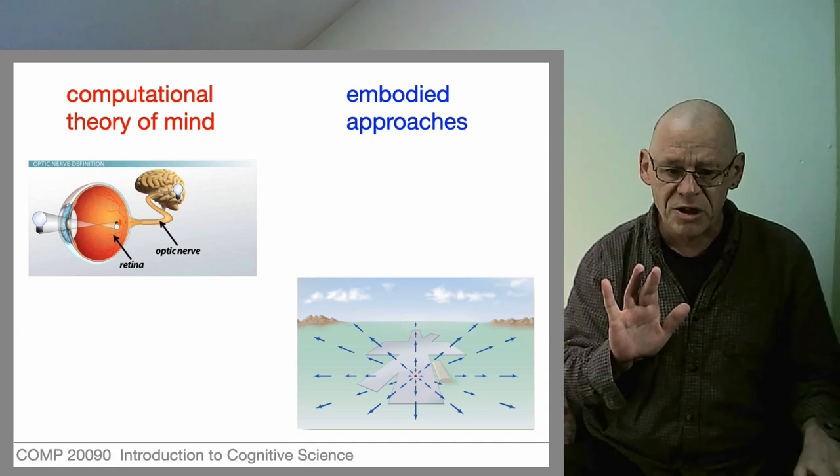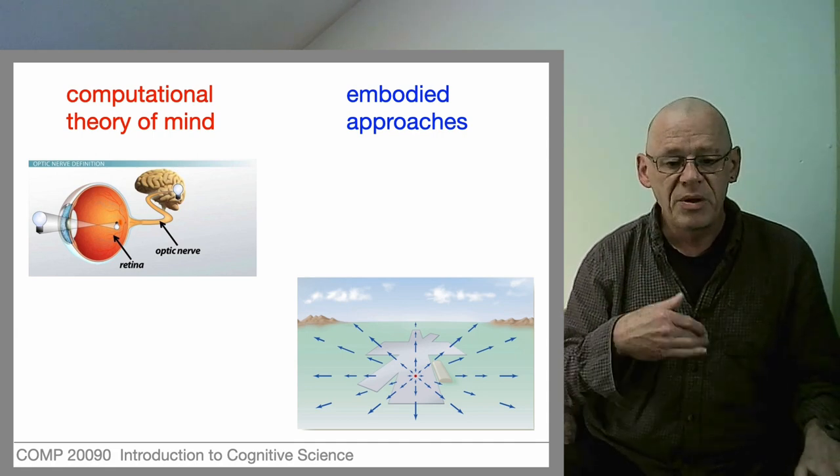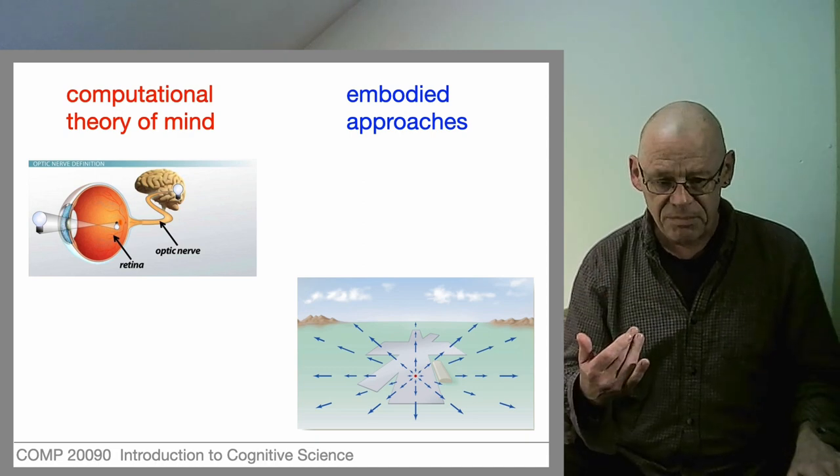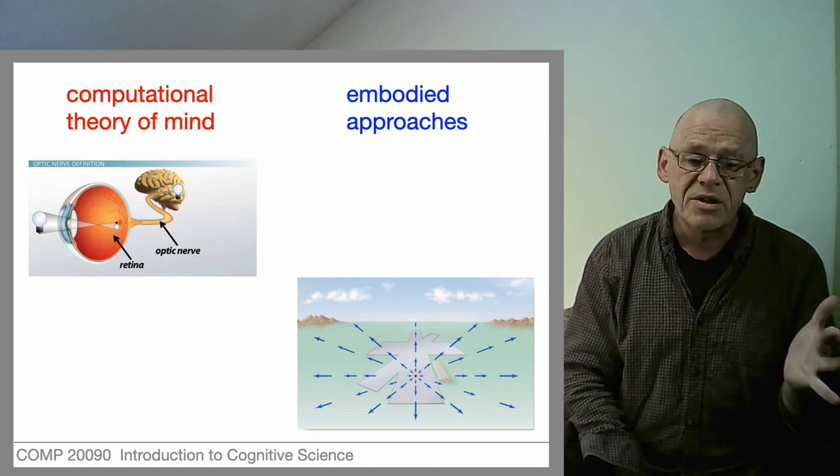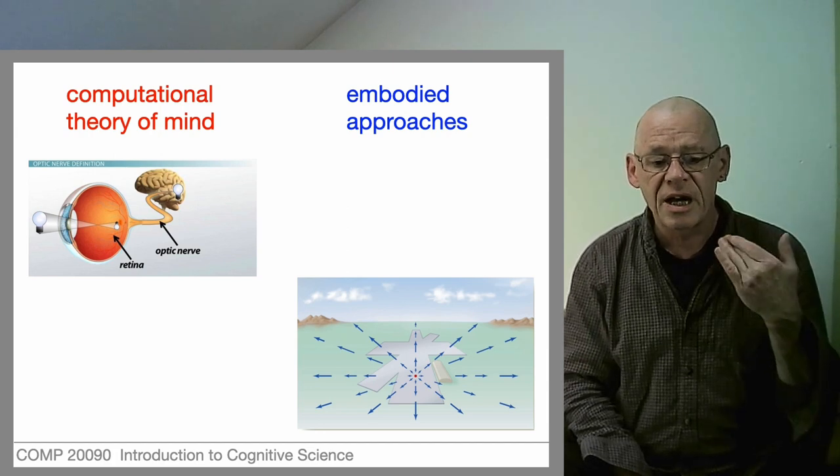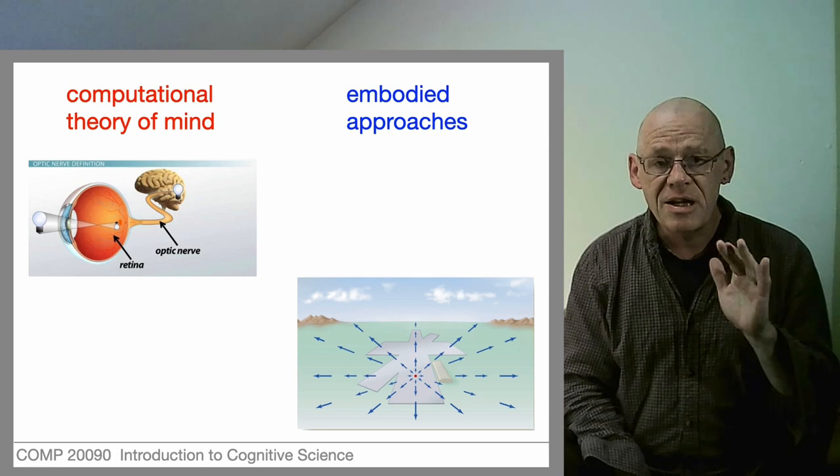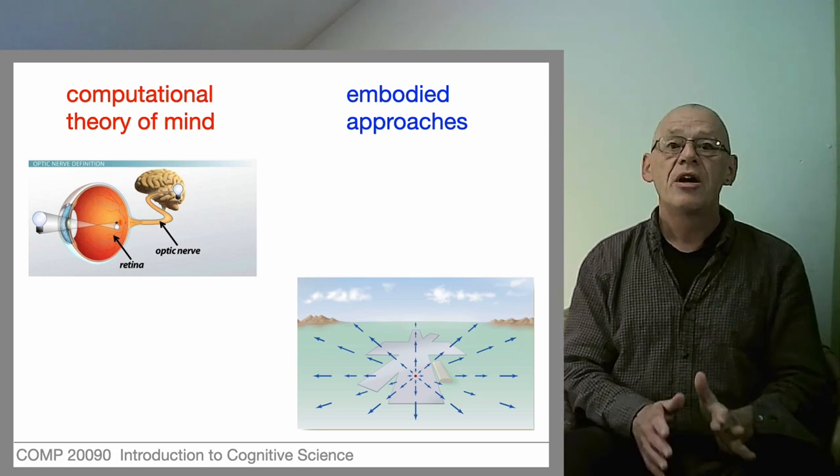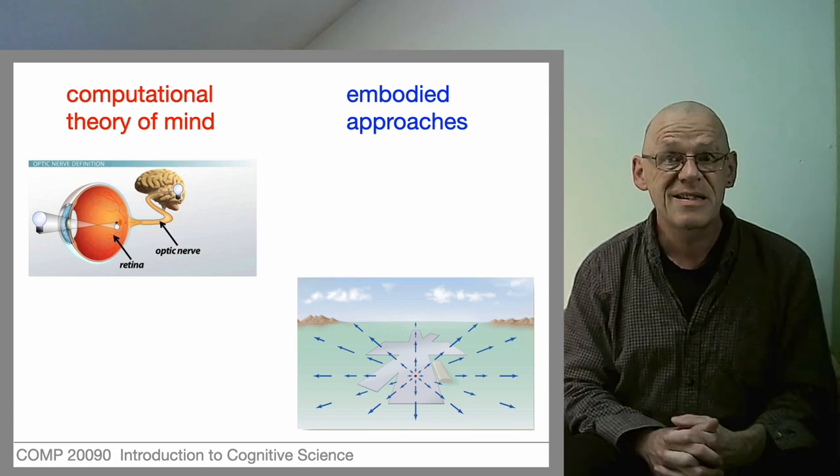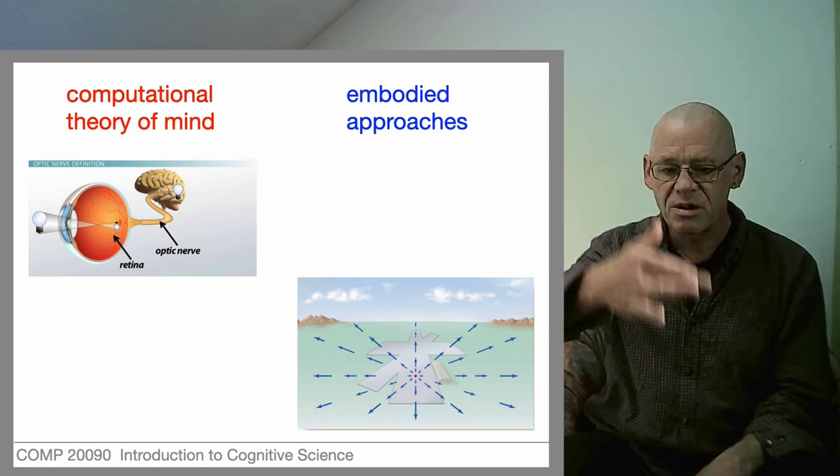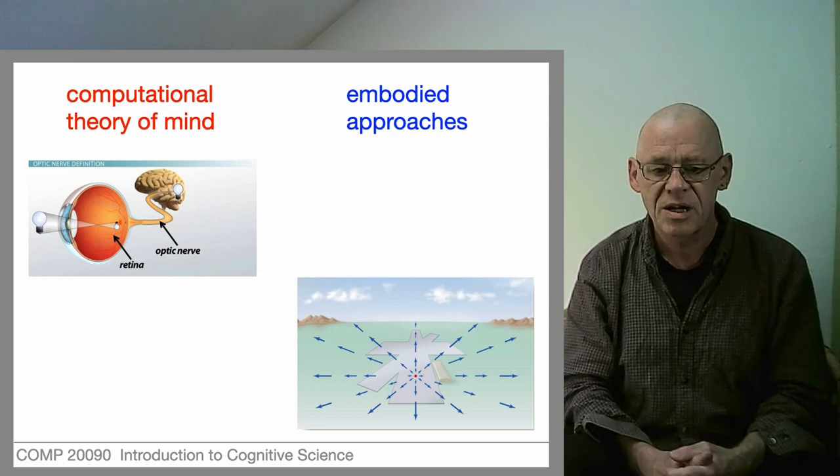So we're going to have a basic disjunction as we go ahead between computational theories of mind and embodied approaches. Computational theories of mind hypothesize about what's going on inside the brain, and they typically inform themselves by using experiments in which the person sits still. The person sits still and something is presented, and they report back what they can see and what they can't see.